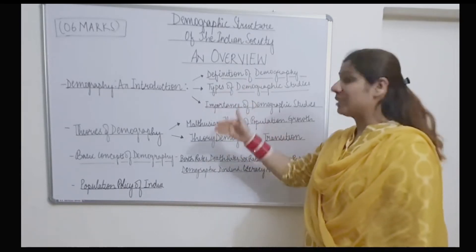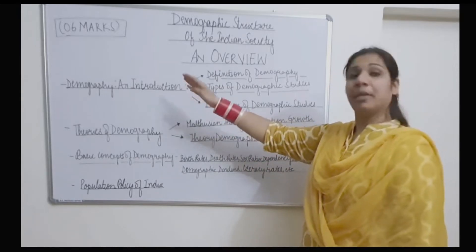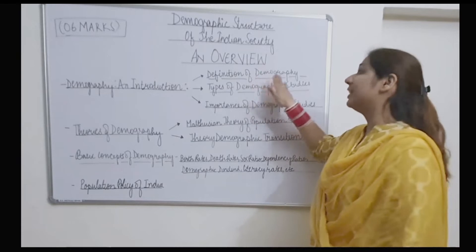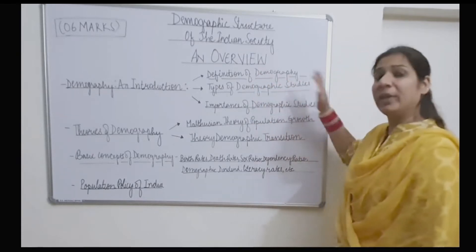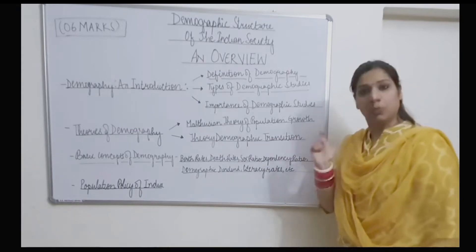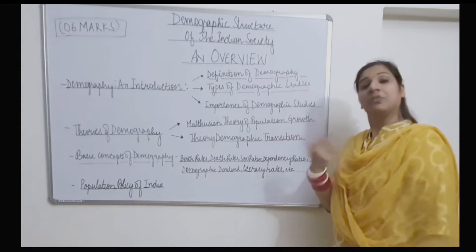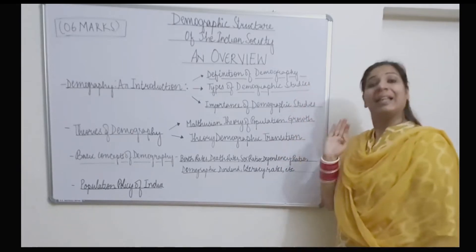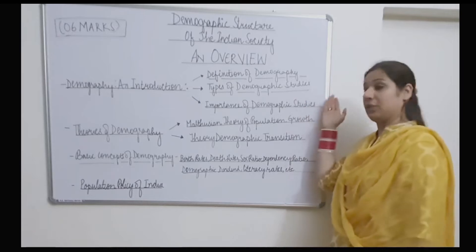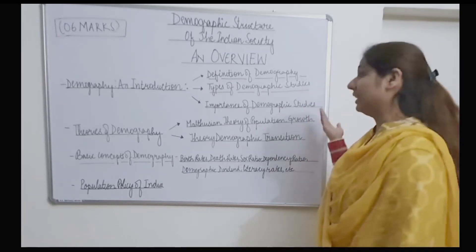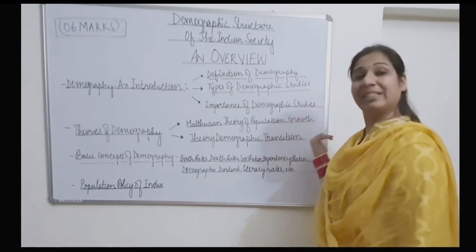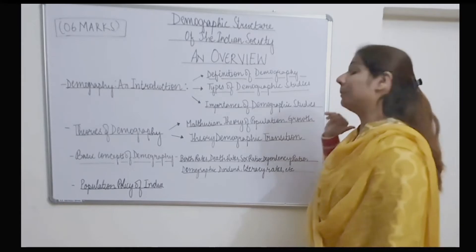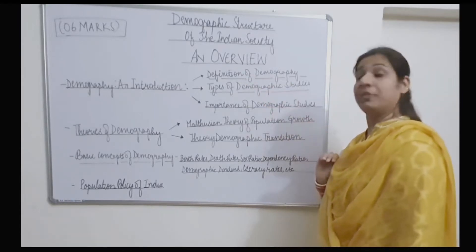Under 'Demography and Introduction,' there are three basic things we will discuss. First is the definition of demography — the word comes from two Greek words: 'demos,' meaning population, and 'graphene,' meaning study. So demography is the systematic study of the population. The second topic is types of demographic studies: formal demography and social demography.